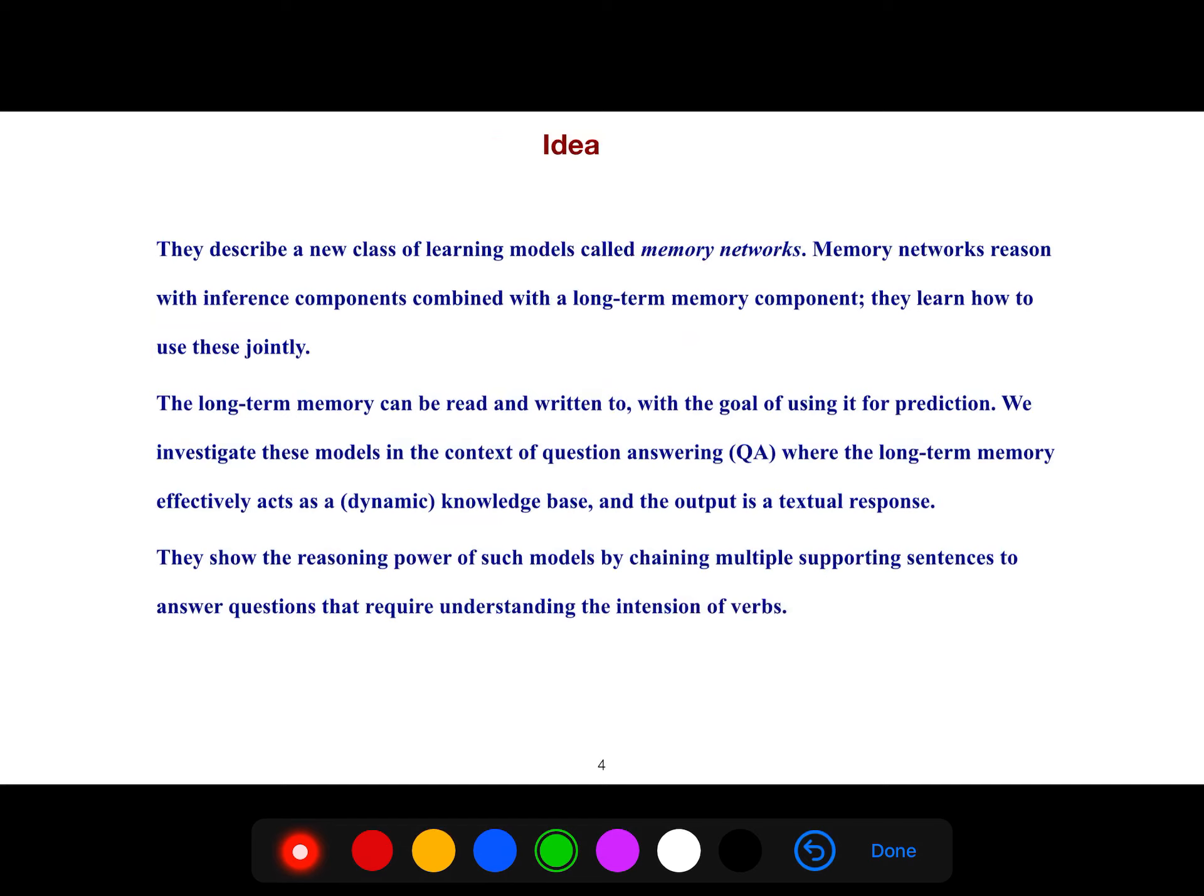But the idea for memory networks is very interesting. Memory networks reason with inference components combined with long-term memory components. They learn how to use these jointly. The long-term memory can be read and written to with the goal of using it for prediction. We investigate these models in the context of question answering where the long-term memory effectively acts as a dynamic knowledge base and the output is a textual response. They show the reasoning power of such models by chaining multiple supporting sentences to answer questions that require understanding the intention of the verbs.